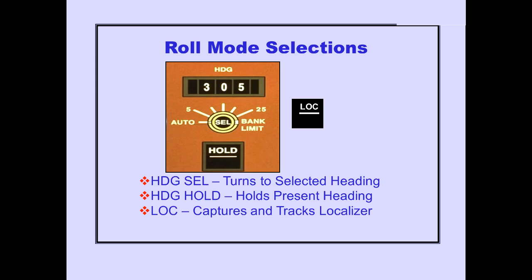Here are the major points we have discussed about the roll mode selections. Heading Select turns the airplane to the selected heading. Heading Hold holds present heading; if engaged in a turn, the wings are first leveled. Localizer captures and tracks the tuned localizer.